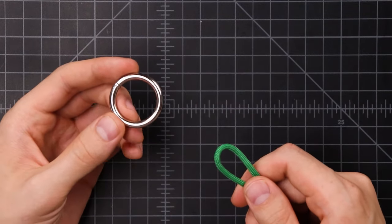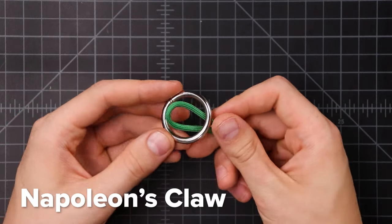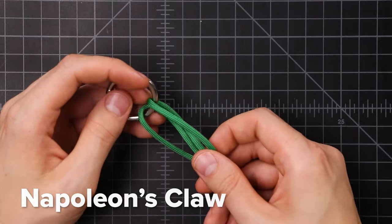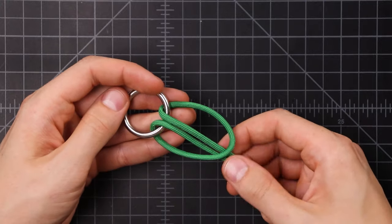This next one is affectionately known as Napoleon's Claw, made by Xtreme Para YouTube channel. We'll again start by making a cow hitch, leaving it loose, and flipping it over so that our cross piece is on top.